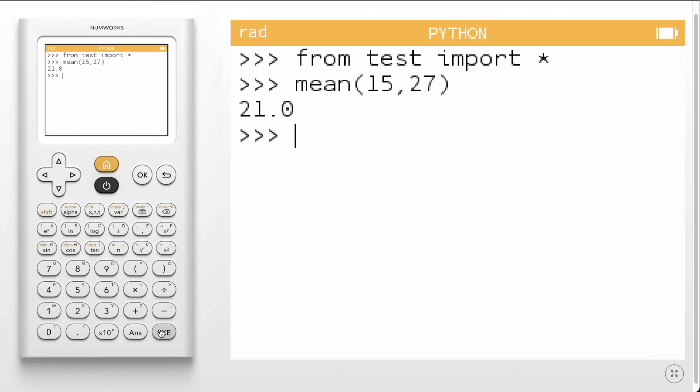Our function now returns the average of these two values, 21. For more tutorials, visit numworks.com.